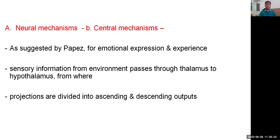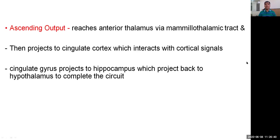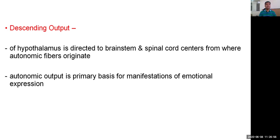The central neural mechanism, as suggested by the Papez circuit, involves sensory information from the environment passing through the thalamus to the hypothalamus, from where projections are divided into ascending and descending outputs. The ascending output goes to the anterior thalamus via the mammillothalamic tract, then projects to the cingulate cortex, which interacts with the cingulate gyrus and projects back to the hypothalamus to complete the circuit. The descending output of the hypothalamus is directed towards the brainstem and spinal cord, from where autonomic fibers originate, and this autonomic output is the primary basis for manifestation of emotional expression.